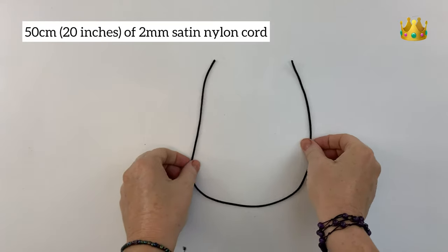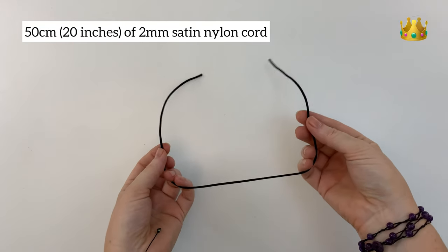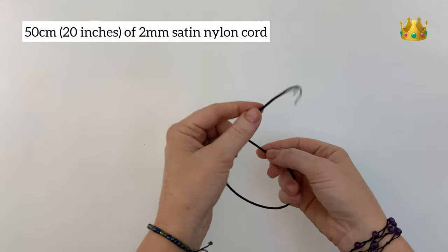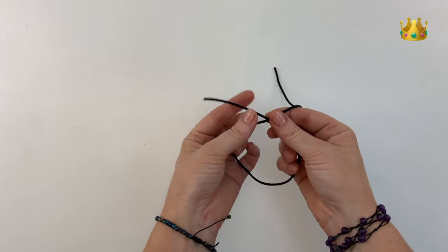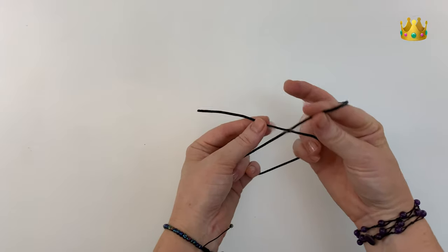We're using 50cm of 2mm satin nylon cord. Now we start by laying the left side cord on top of the right side cord, overlapping them at the top here.